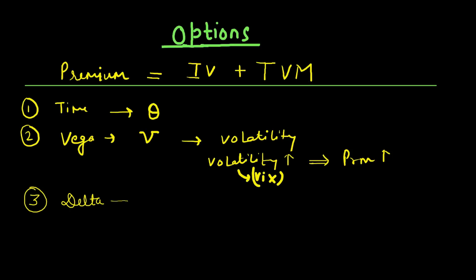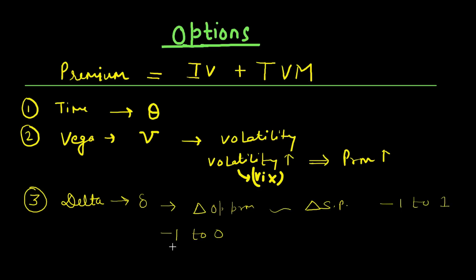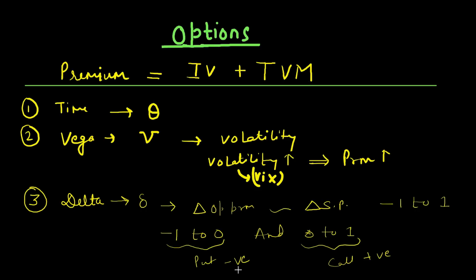The third factor is delta, denoted with its symbol. Delta measures the sensitivity of change in option premium due to the change in stock price. It is usually denoted between minus 1 to 1: minus 1 to 0 for put options and 0 to 1 for call options. So for call options delta is positive and for put options delta is negative. For example, if a call option has a delta of 0.5, it means that if the stock price goes up by 1 rupee, the option premium goes up by 0.5.